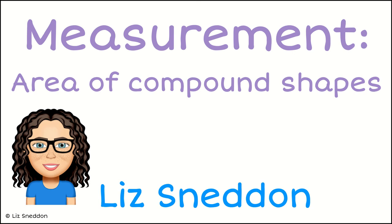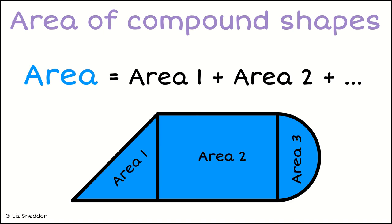Hi, it's Liz Sneddon. Let's have a look at finding area of compound shapes. The idea behind finding area is to take a great big shape and break it into smaller individual shapes — breaking it into small ones that we recognise, like rectangles, triangles, and squares. Once we do that, we can then add the different individual areas together to find the total area of the whole thing.